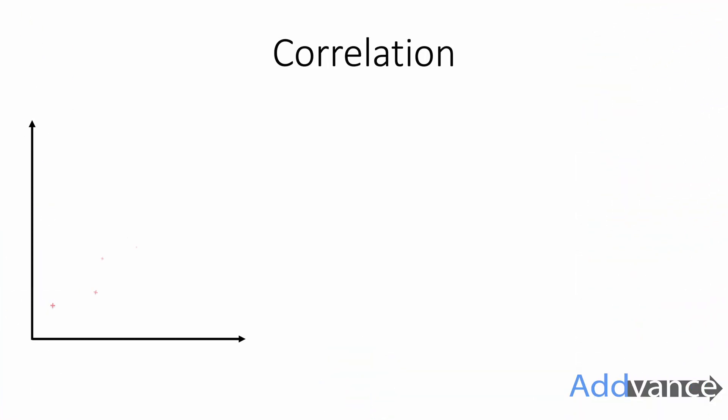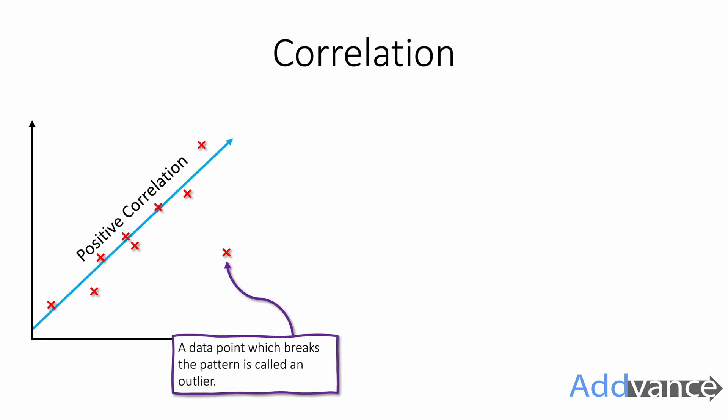Now let's talk about correlation. Correlation is how we describe the pattern of the data. Here on this scatter graph we can see the points are roughly going up. There is one data point that's out of place. This is what we call an outlier. It's a long way from the rest of the points and it seems to break the pattern.